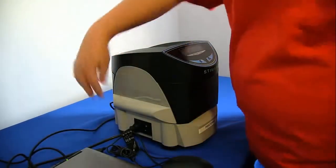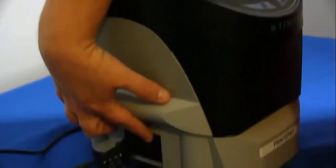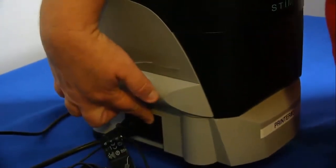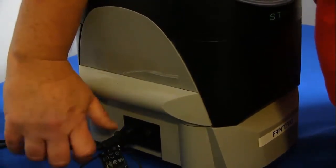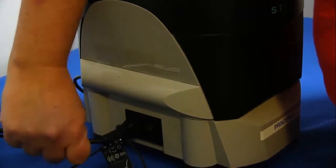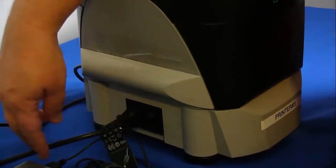Once you have everything plugged in, we're going to go ahead and turn on the ticket printer. There is a switch right here on the side of the printer. Some of these actually have a little attachment right here that has the switch on the cable itself.